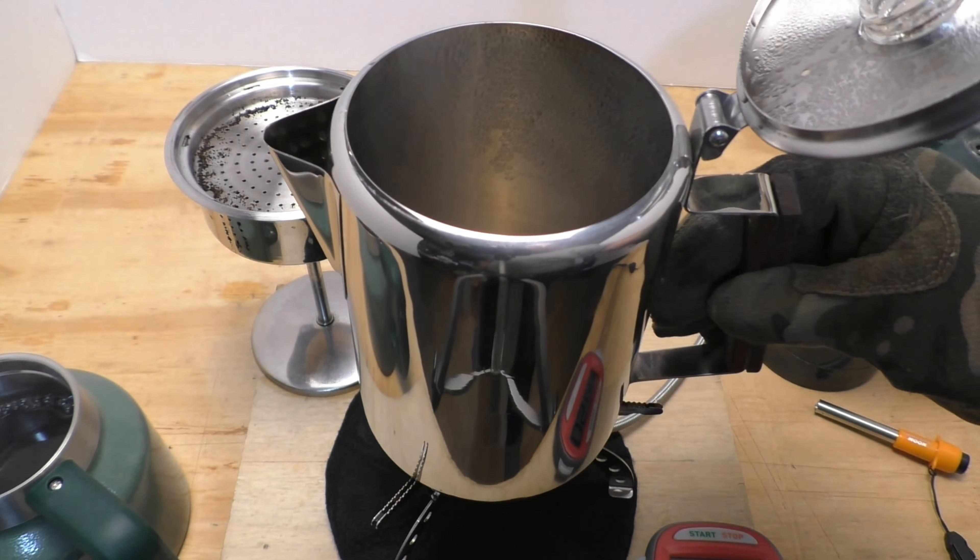I think this Eurolux 9-cup coffee percolator is perfect for one or two people. Beyond that, you'd need a bigger percolator. Like if you had a group of three, maybe four people, you're going to need a bigger one. It's all stainless steel. The perk top is glass, which is a big bonus.